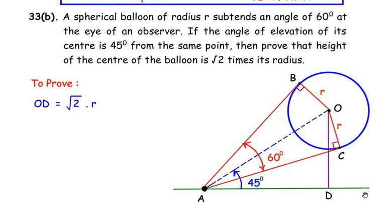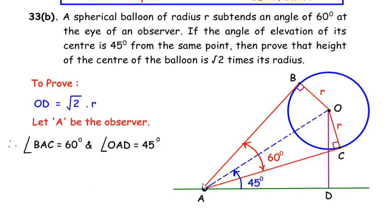After drawing and understanding the figure, we have to prove that the height of the center of the balloon — OD — is equal to root two times the radius r. Let A be the observer. Two angles are made at A: angle BAC is 60 degrees (with respect to the radii of the circle) and angle OAD is 45 degrees (the angle of elevation of the center).